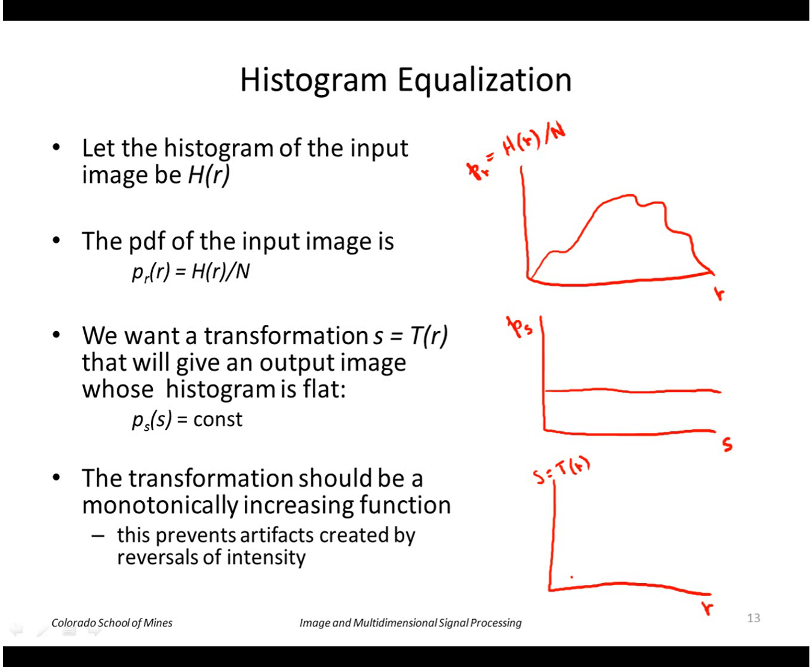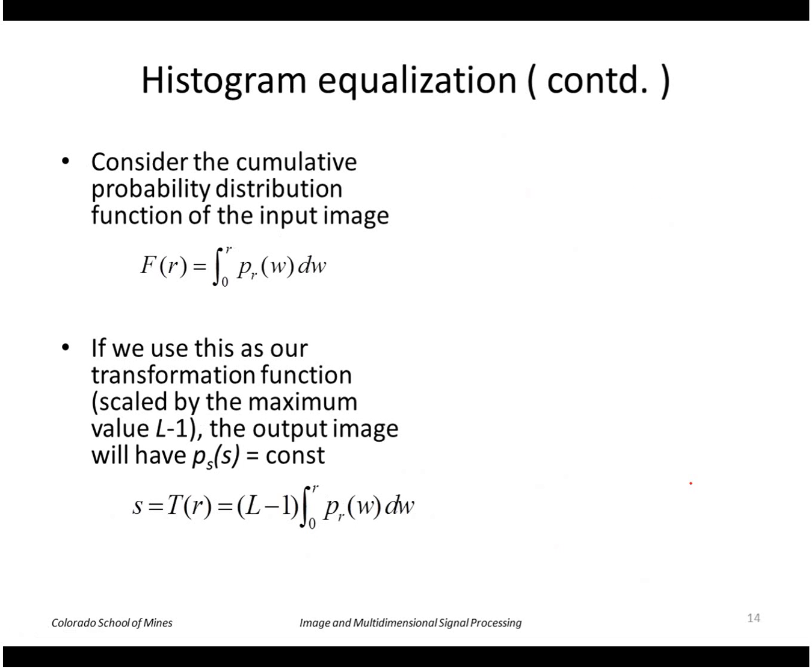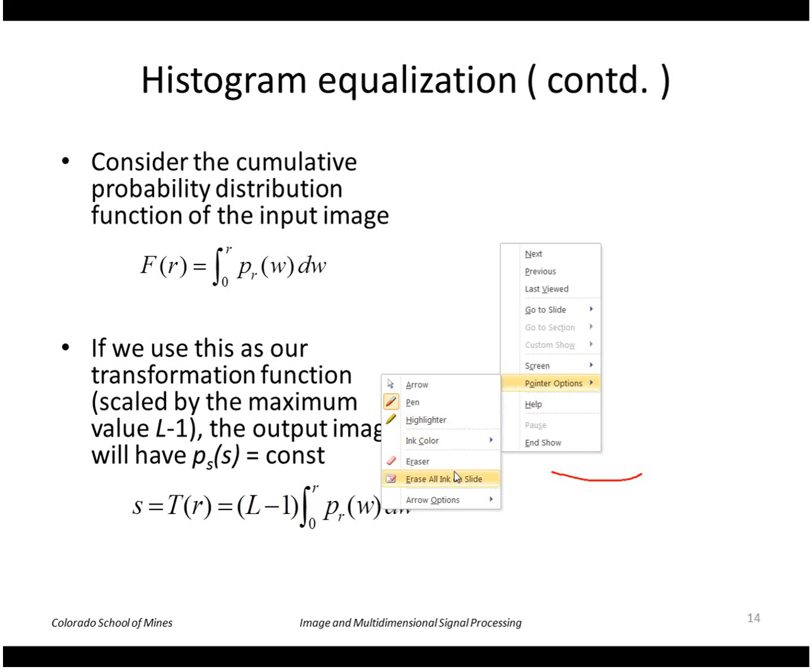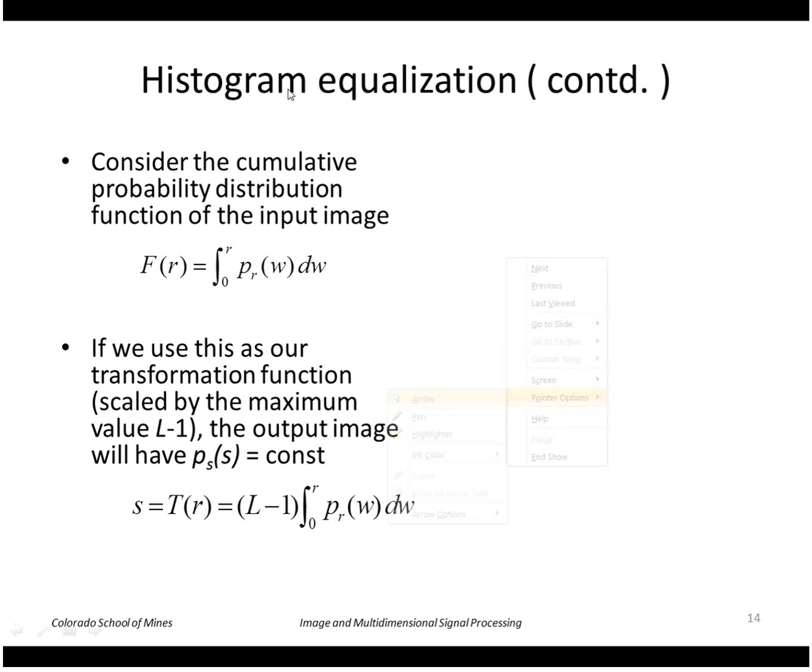This function should be monotonically increasing. In other words, we don't want reversals where a low value of r and a high value of r both map to the same value of s. If we use the CDF of the input image as our transformation function, that will achieve that result. We do have to multiply by L minus 1, where that's the maximum value in the output image, because the CDF ranges from 0 to 1, whereas we want our output values to range from 0 to L minus 1.